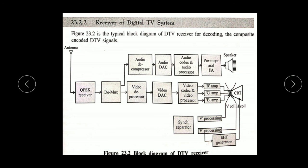There is also an EHT generator, basically a flyback transformer — an extra high tension generator. This is the basic block diagram of the digital TV receiver.